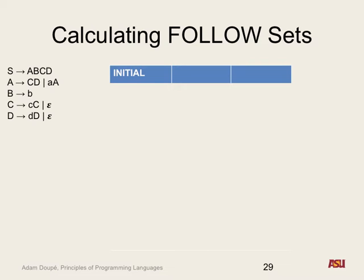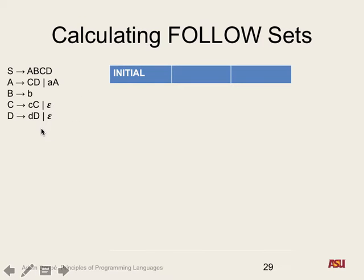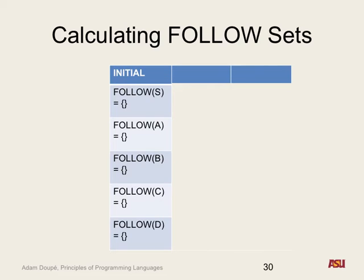Let's run through an example with this grammar: S goes to A, B, C, D. A goes to big C, big D, or little a, big A. B goes to big B. C goes to little c, big C, or epsilon. D goes to little d, big D, or epsilon. We've already calculated the first sets. The first step: initialize all follow sets to the empty set.